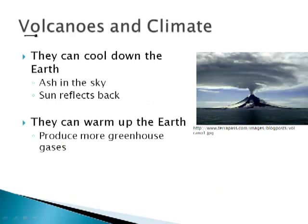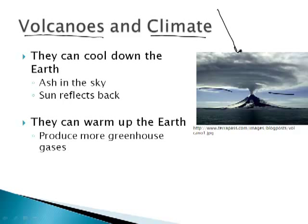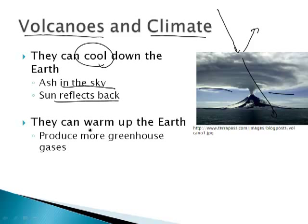Other things related to plate tectonics are volcanoes. Volcanoes can either cool down the earth or heat it up. If a volcano produces a lot of ash, sunlight shines down and reflects back off the ash. When it reflects back, it doesn't make it to the earth — therefore the reflection will cause the earth to cool. So ash in the sky causes the sun to reflect back and cool the earth.